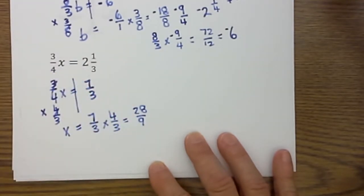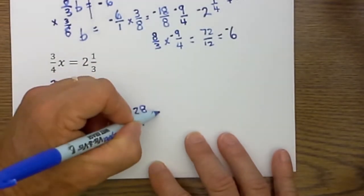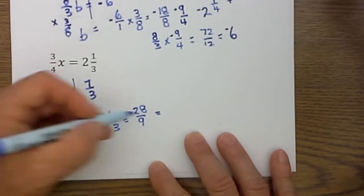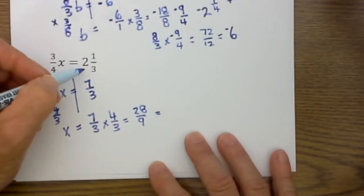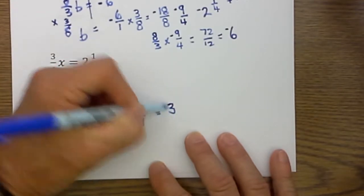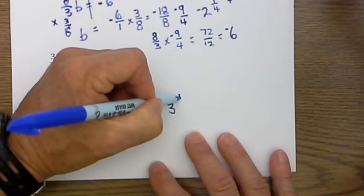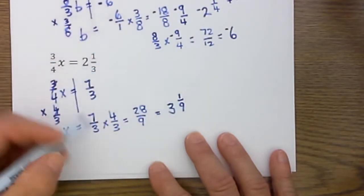I have 7/3 times 4/3, that is the reciprocal. 7 times 4 is 28, 3 times 3 is 9. Can I reduce this down further? I think so. Let's see here, 28 what will go into that. It is reduced down completely. I can then convert it into a mixed fraction if I would like. So 9 will go into 28 three times with a remainder of 1 and so it will be 3 and 1/9.